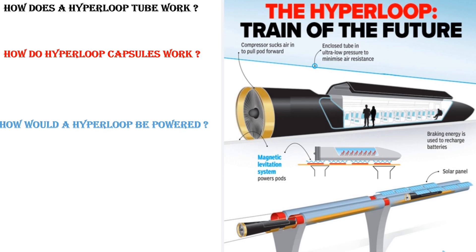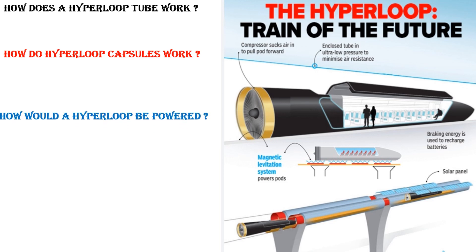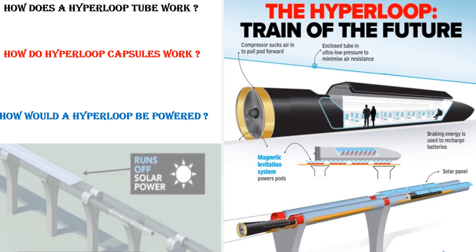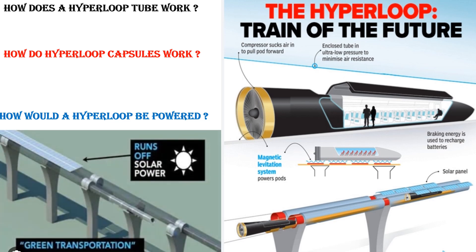How would a hyperloop be powered? The tube or tunnel will have solar panels on top, which will generate the energy needed to power the hyperloop system.